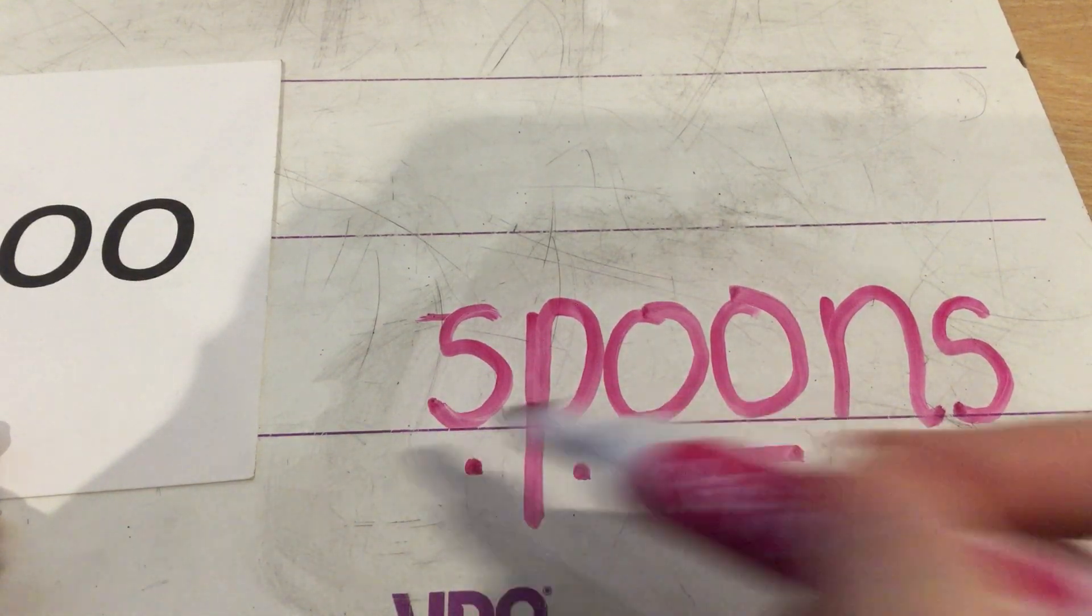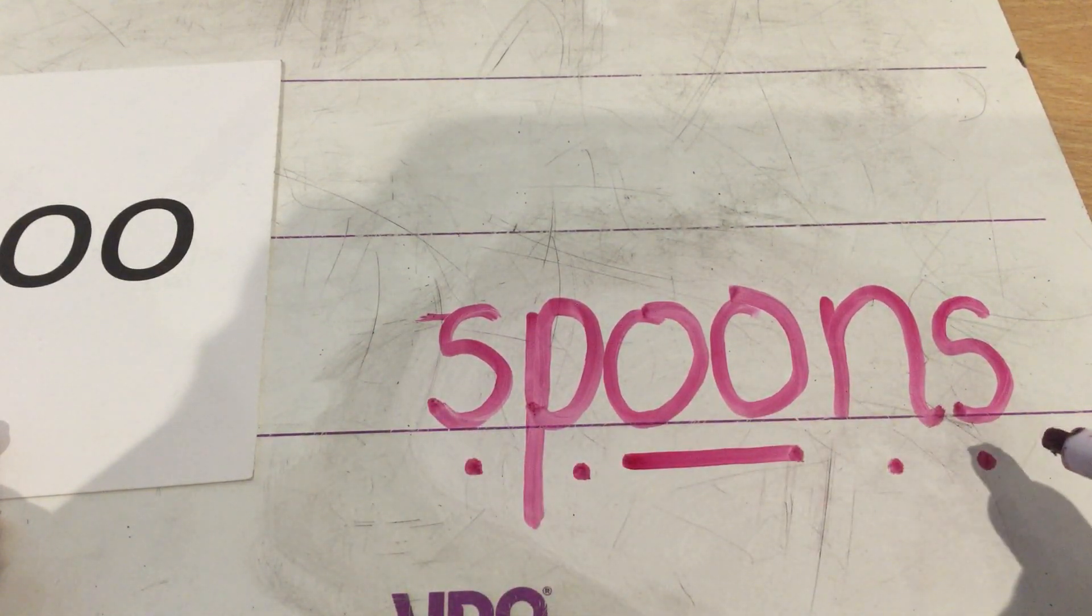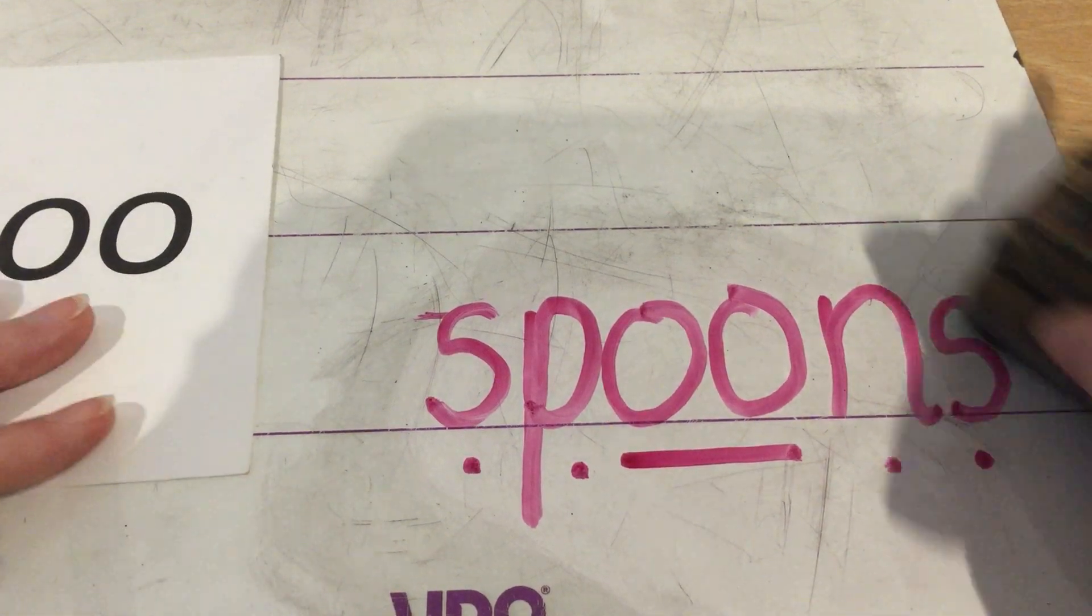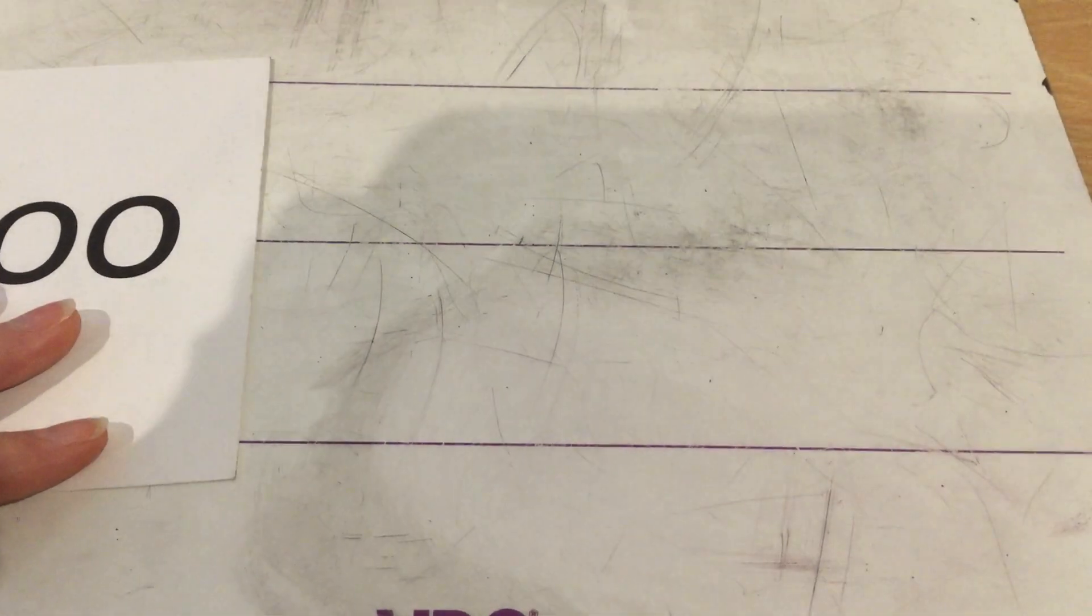What would happen if I put S on the end? Do you think you could read it now? Well we know we had the word spoon. Spoon. We've just put S on the end. So spoon becomes spoons. One spoon. Lots of spoons. Fantastic.